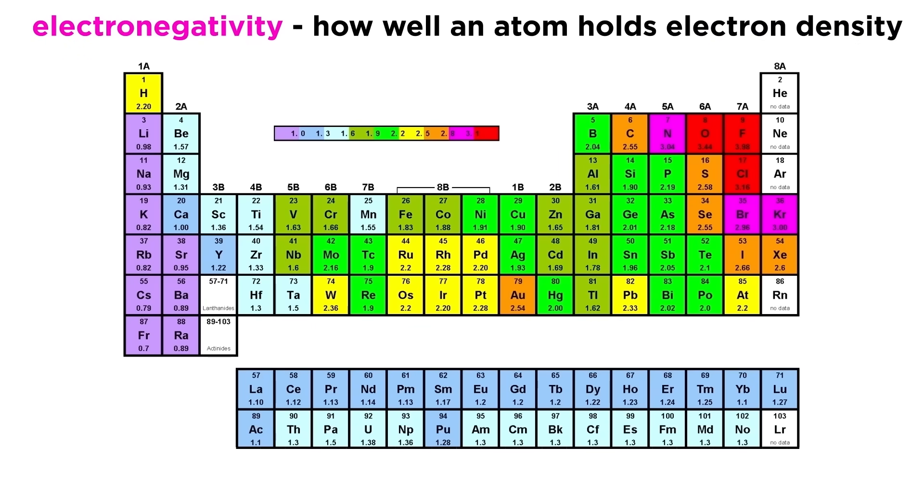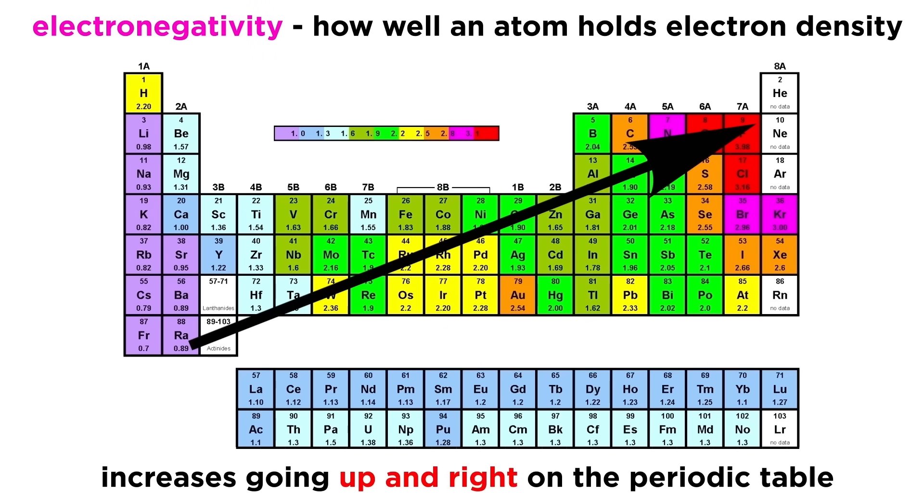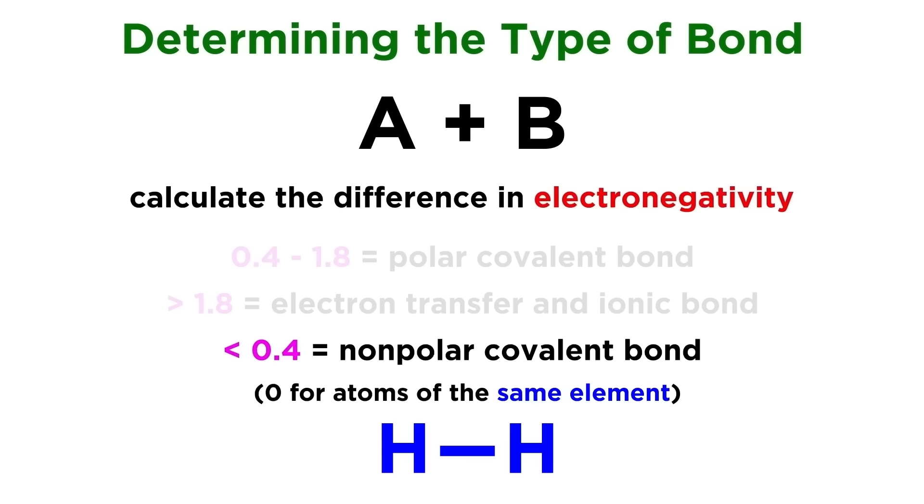The parameter that will determine which of these bonds forms is electronegativity, or the measure of how well an atom holds electron density close to itself in a covalent bond. This increases going up and right on the periodic table, excluding the noble gases, such that fluorine is the most electronegative element. This is why bonds between atoms of the same element are nonpolar, because they must have identical electronegativities, so the electron density must be shared equally.